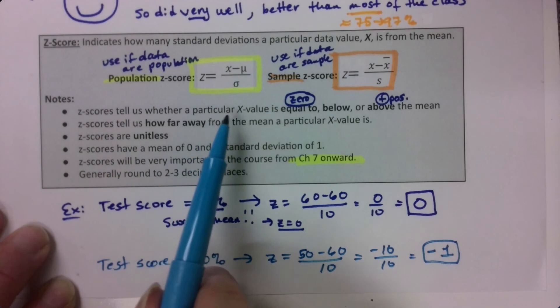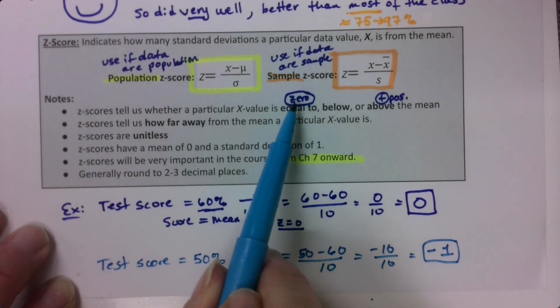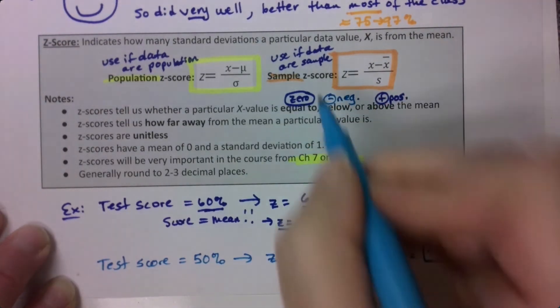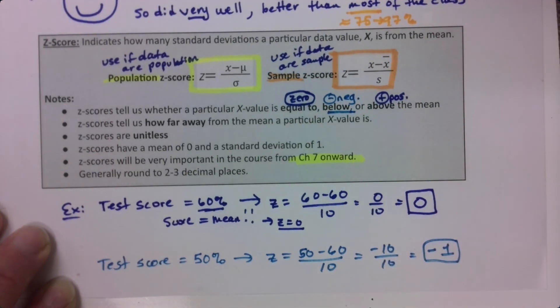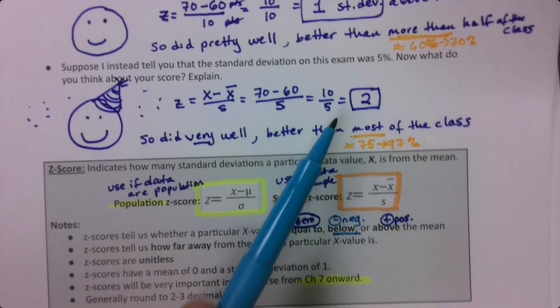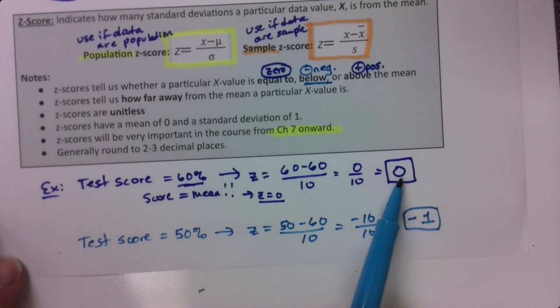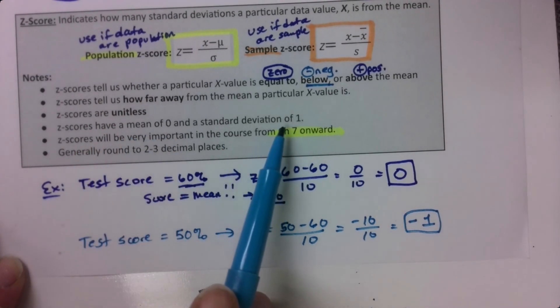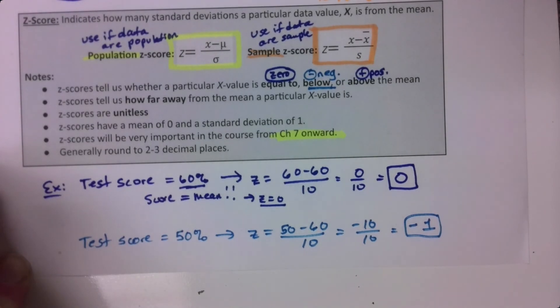Z-scores tell us whether a particular value is equal to the mean. If it's equal, then your z-score is 0. Below the mean, if you have a negative z-score. And above the mean would have a positive z-score. Positive z-scores above, negative z-scores below. A 0 value means that you scored the mean. That's why z-scores have a mean of 0 and a standard deviation of 1. That's the way it would work out.